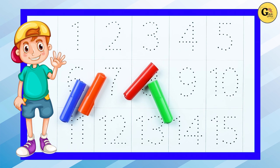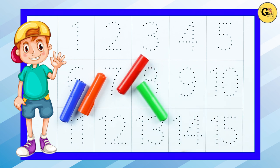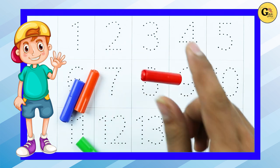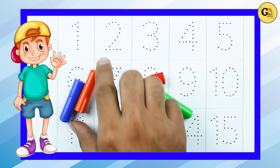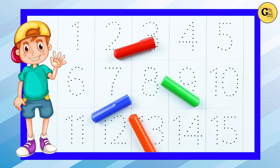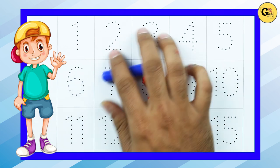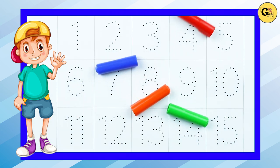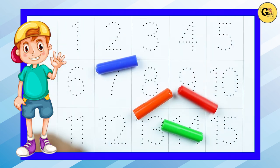Hello friends, today we will learn numbers 1 to 15 with some colors: green color, red color, orange color, blue color. Let's start.